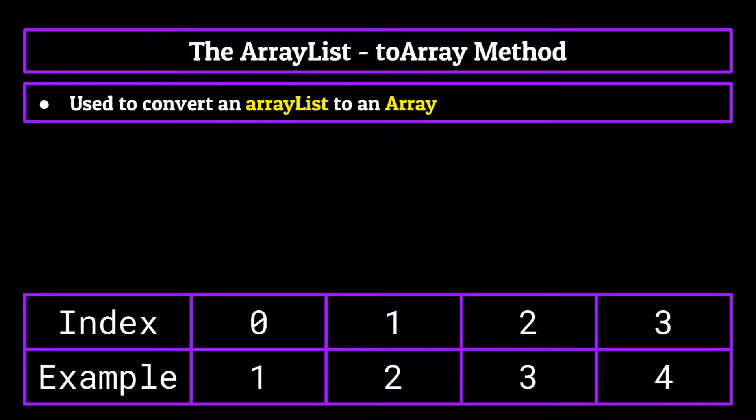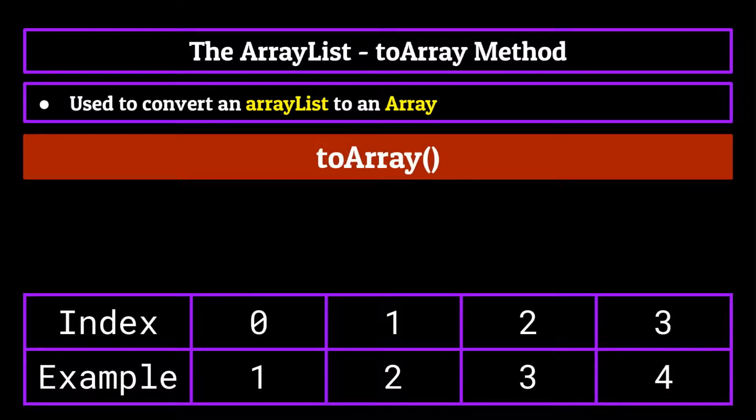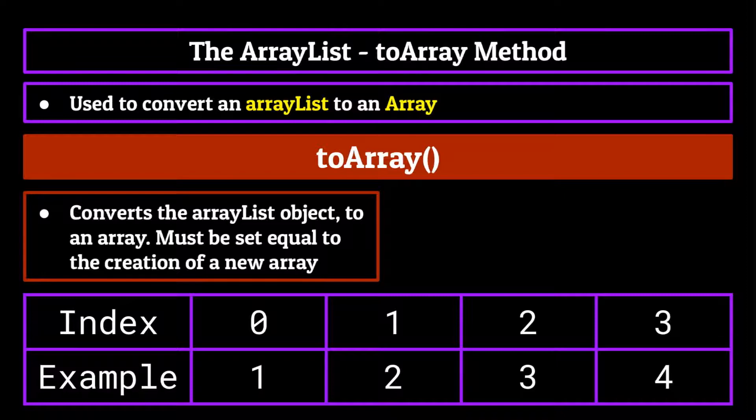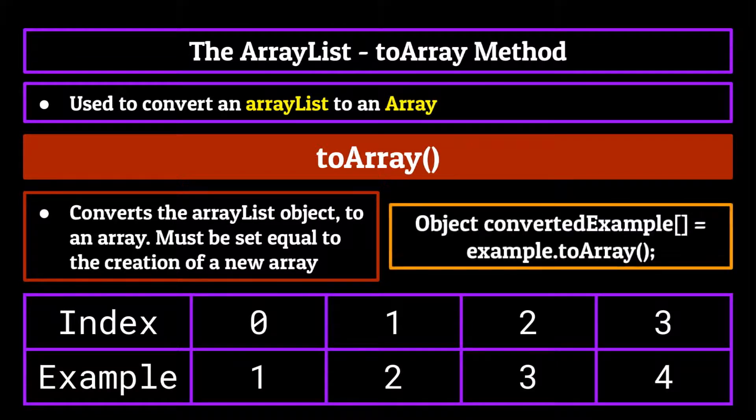Now the final method we'll be covering in this video is a little bit different than the rest. And that's the to array method, which is used to convert an ArrayList to an array. I thought I'd include this one because it's really useful and good to have on hand, especially for a series on data structures. The to array method takes in no arguments and will simply convert the ArrayList object to an array. Now for this to work, of course, you're going to need to set it equal to the creation of a new array like shown on your screen now. But when you do, you'll get a new array which contains all of the elements that were in the old ArrayList.